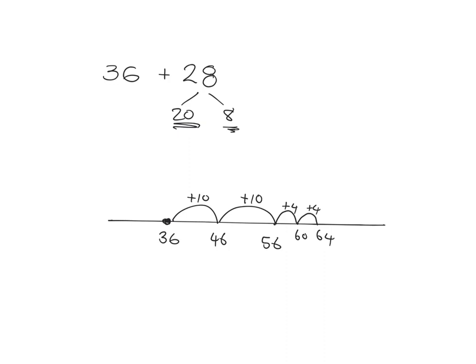If I practice this enough, I'll get quite fast with it and be able to do it in my brain without having to write it down. I'll be able to go 36, okay, 46, 56, and 56 and 8—well, that'll be 4 to 60 and then another 4 gets me to 64. And that's what we're aiming to get at.